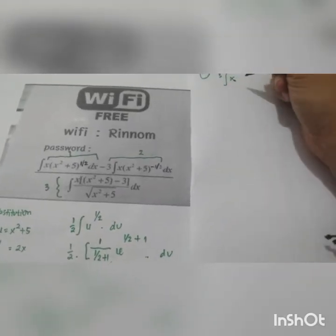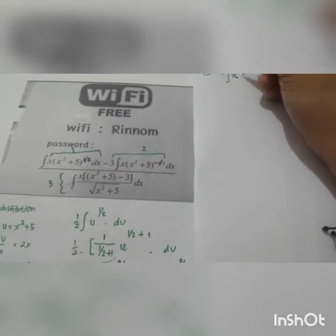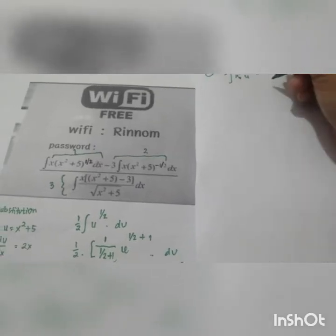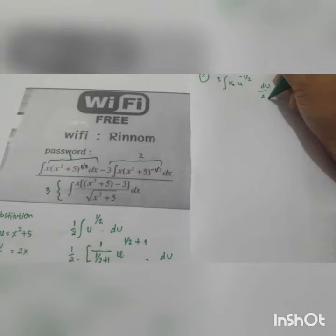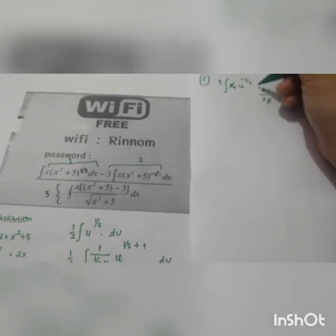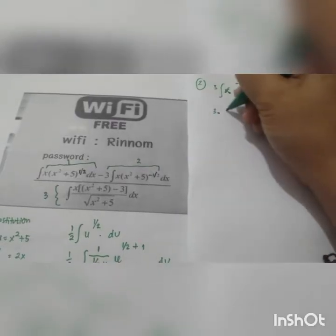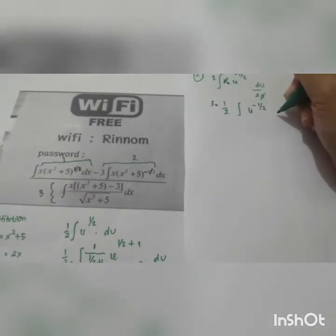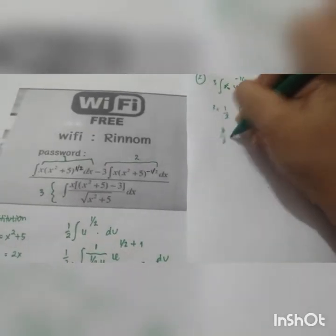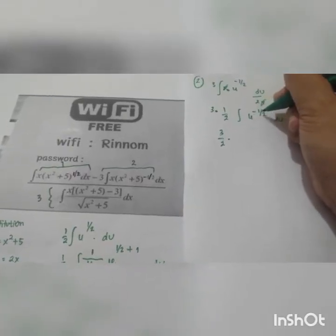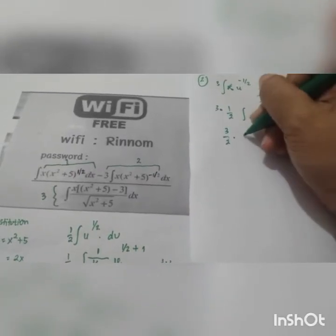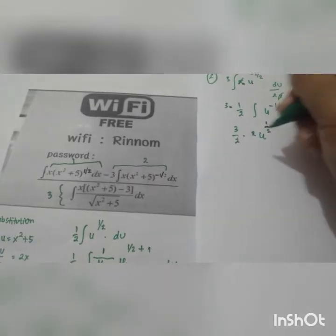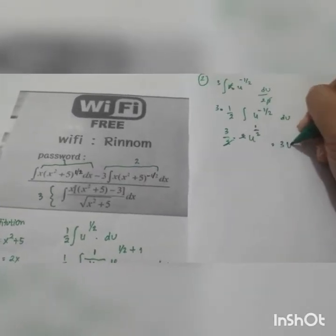For Step 2, the component in the bracket has been substituted as u, written as u to the power of negative one-half. After substituting dx as du over 2x and eliminating x, we have 3 times one-half times the integral of u to the power of negative one-half. Applying the power rule this gives 2 times u to the power of positive one-half, so Step 2 result is 3 times u to the power of one-half.